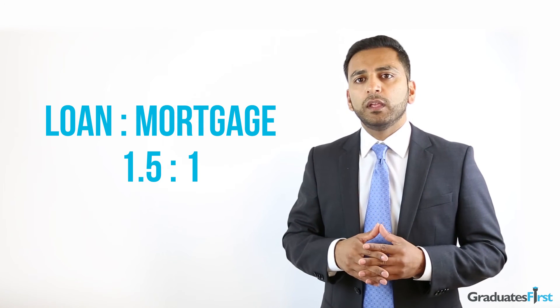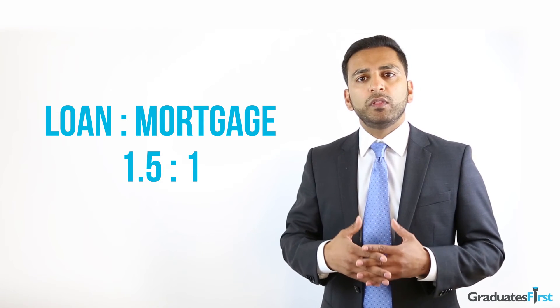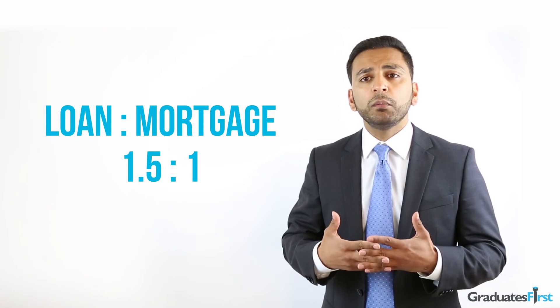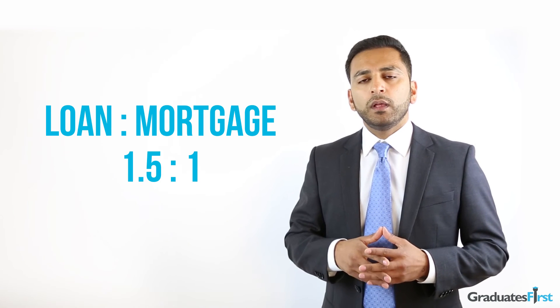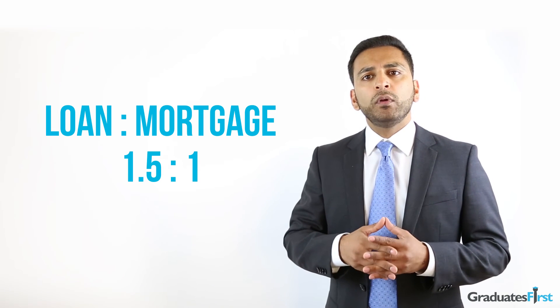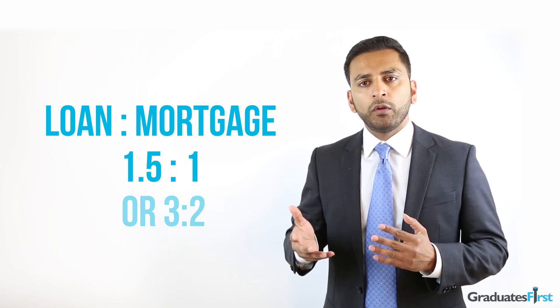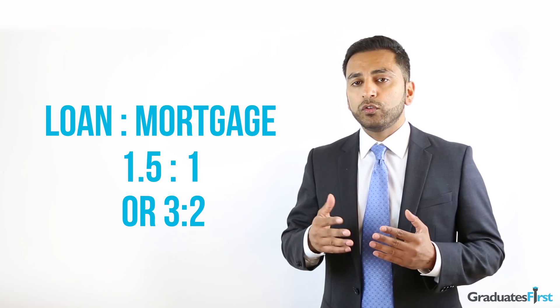Finally, we can choose to round up these values to whole numbers, as often they make more business sense. Loan to mortgage: 1.5 to 1, or equivalently, 3 to 2.